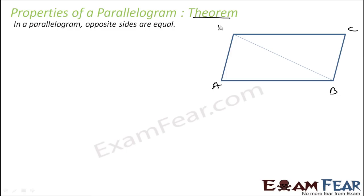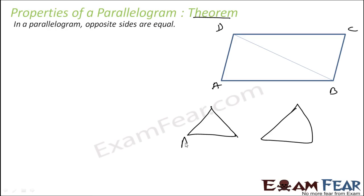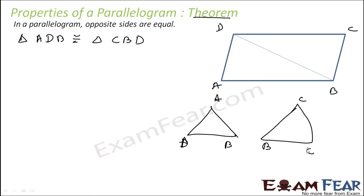We have just proved that triangles ABD and CBD are congruent. Triangle ADB is congruent to triangle CBD. We have just proved, or you can state as a theorem, that a diagonal divides the whole parallelogram into two congruent triangles. Since they are congruent, I can say that AD is equal to BC.